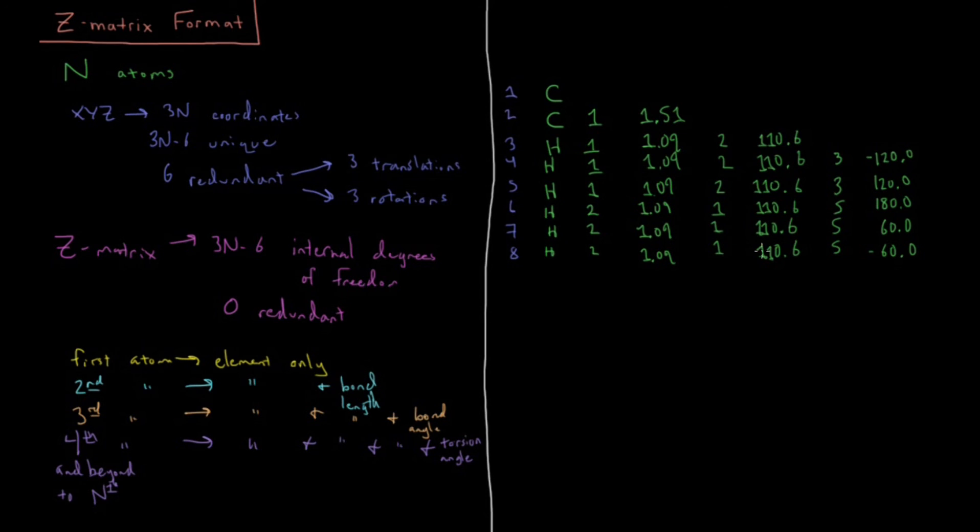Most quantum chemistry programs will use both of these types of input structures for specifying molecular geometry. Sometimes it just depends. Sometimes it's easier to build things in Cartesian. Sometimes it's easier to build them in Z matrix. It all depends on the application, but they are both widely used formats in computational chemistry.